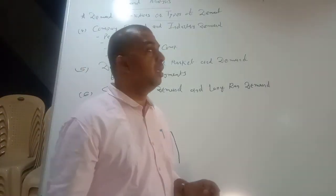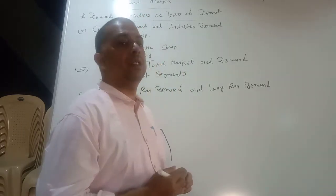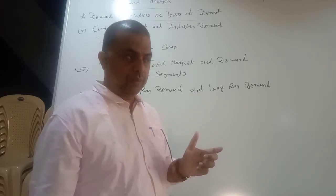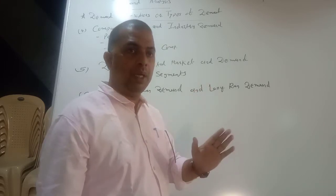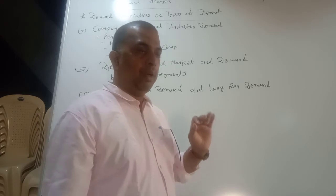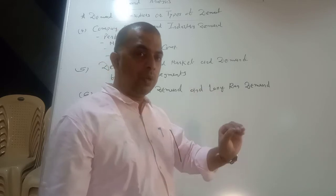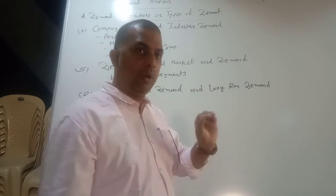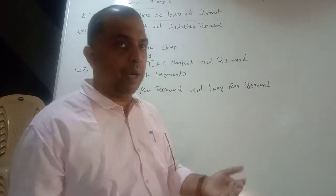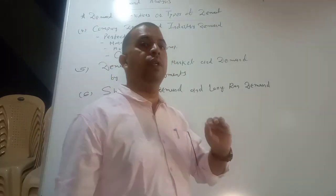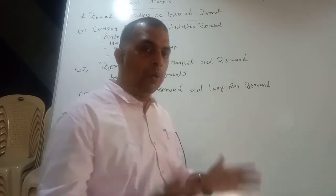Hello, good morning students. We are discussing demand analysis. In the last video we discussed what is demand for the product — how you can define demand: desire plus ability to pay plus willingness to pay. We also discussed three types of demand: demand for consumer goods, demand for capital goods or producers' goods, demand for perishable goods, demand for durable goods, and autonomous demand and derived demand.